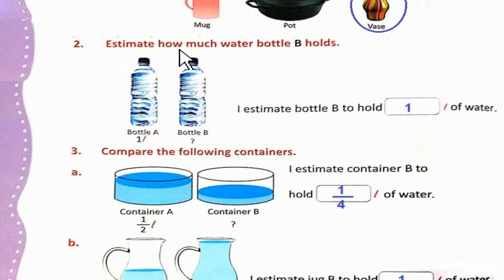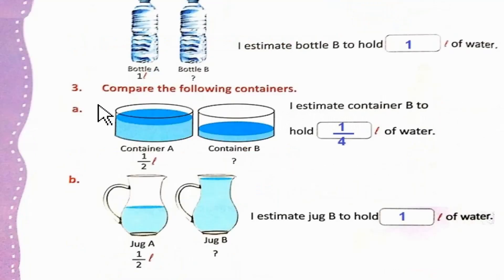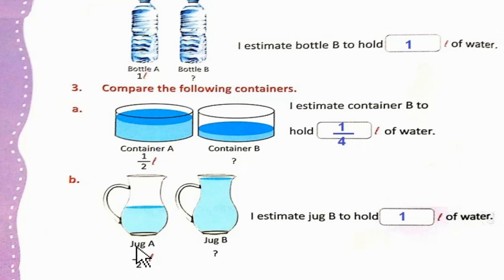Question 2 — estimate how much water bottle B holds. Bottle A holds 1 liter; bottle B is the same size as bottle A, so bottle B also holds 1 liter. Question 3 — compare the containers. Container A holds 1/2 liter; container B holds less than A, so I estimate container B holds 1/4 liter. Part B: Jug A is half full (1/2 liter); jug B is full — double that — so I estimate jug B holds 1 liter of water.